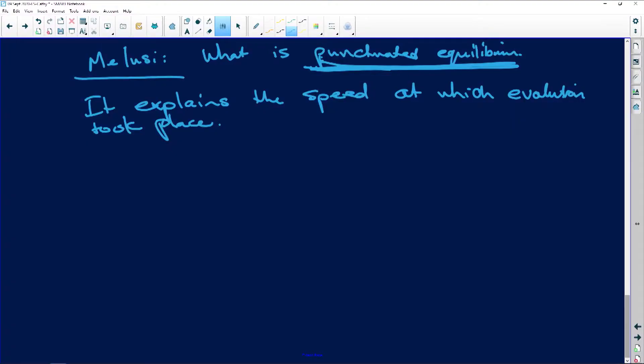Because you've got natural selection which explains how different organisms came about and resulted from one ancestor. You've got Lamarck's theories of use and disuse - they are all theories, but they all explain different reasons why evolution happened. So with punctuated equilibrium, it explains the speed at which evolution took place.